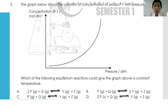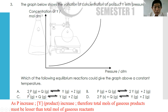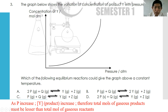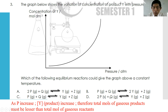That is why equilibrium shifts to the right, which means the right side must have fewer total moles of gas. Looking carefully at the options: B is wrong because the right side has three gas molecules and the left side has two. C is wrong because both sides have the same number of gas molecules. D is tricky because P is a solid — solids are not considered in chemical equilibrium for pressure. So D is incorrect. The best answer is A.